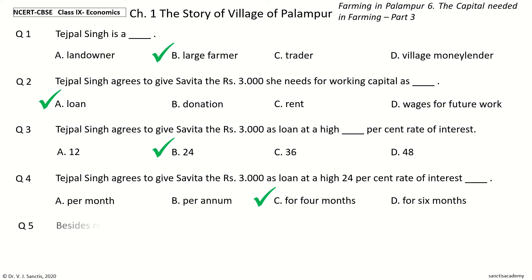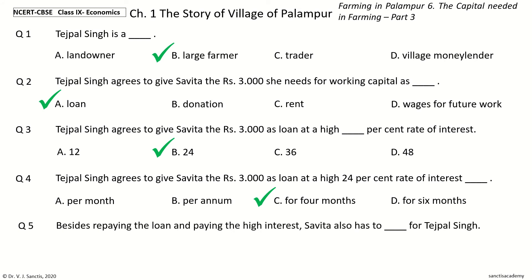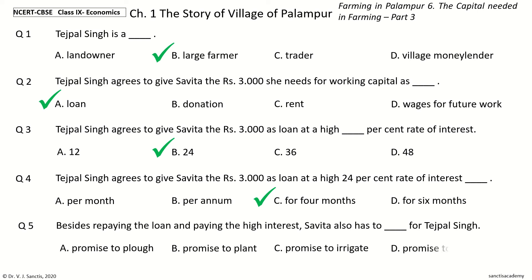Question 5. Besides repaying the loan and paying the high interest, Savita also has to Dash for Tejpal Singh. The options are: Promise to plow, Promise to plant, Promise to irrigate, Promise to work. The answer is Promise to work. So, besides repaying the loan and paying the high interest, Savita also has to promise to work for Tejpal Singh.